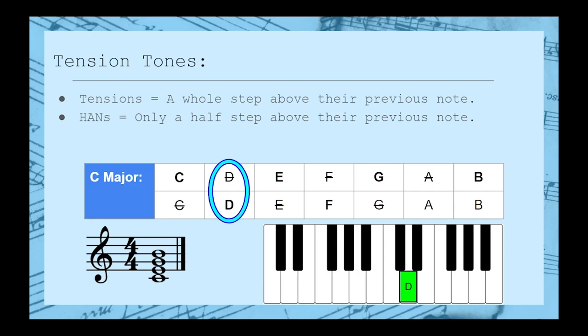In C major, D is a whole step above C, so the 9th is fair game. But F is only a half step above E, so the 11th just won't work.